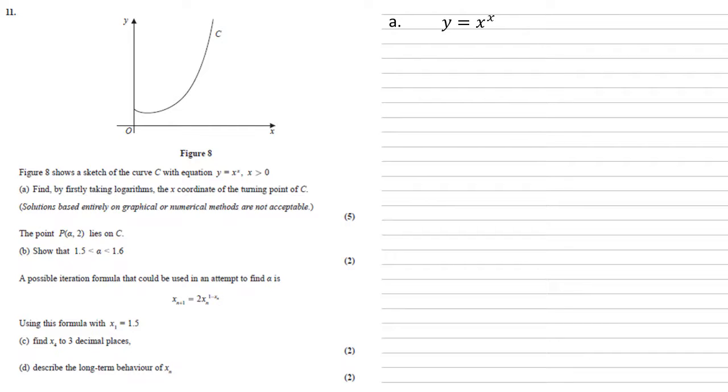So we've got our equation y equals x to the power of x. If we take the log natural of both sides, we get log y equals log x to the power of x. Using the rules of logarithms, we can bring that power outside as a multiple. So we've got that log y equals x log x.